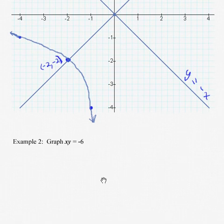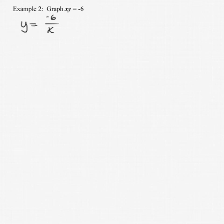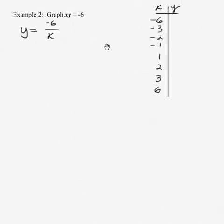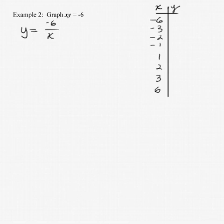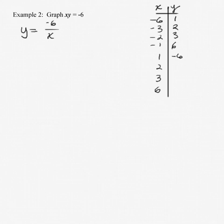Let's look at another rectangular hyperbola where k is a negative number. First, isolate the variable y. We'll make a chart of points — at least 3 negative and 3 positive values, but 6 each is better since k equals −6 has nice factors. We include x = −6, −3, −2, −1, 1, 2, 3, 6 and divide: −6÷−6 = 1, −6÷−3 = 2, −6÷−2 = 3, −6÷−1 = 6, −6÷1 = −6, −6÷2 = −3, −6÷3 = −2, −6÷6 = −1.